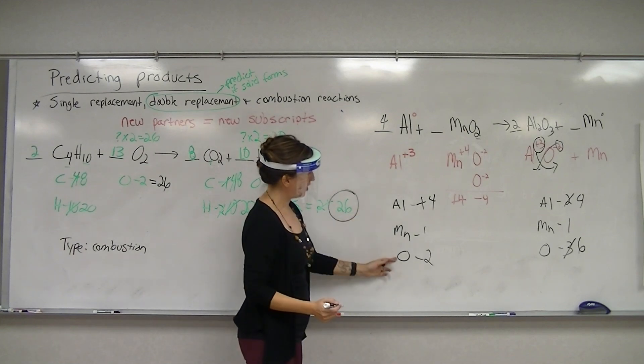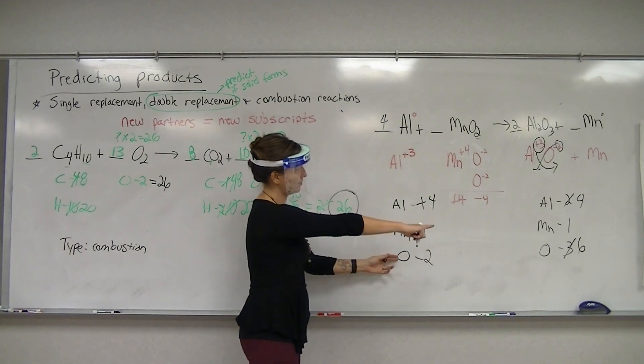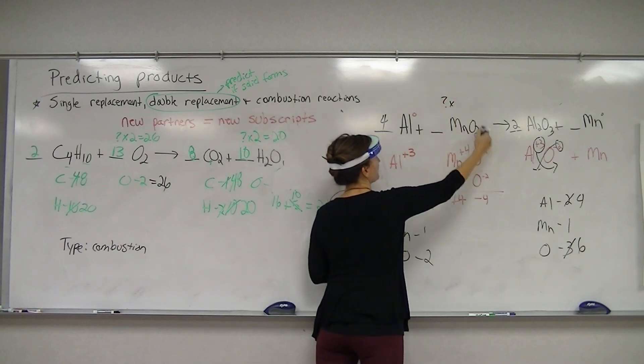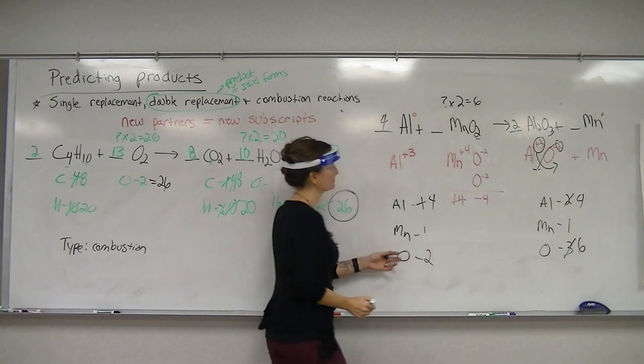And then oxygens, we have six on the product side, and we need six here. So what times the subscript of two is going to give me six? Three.